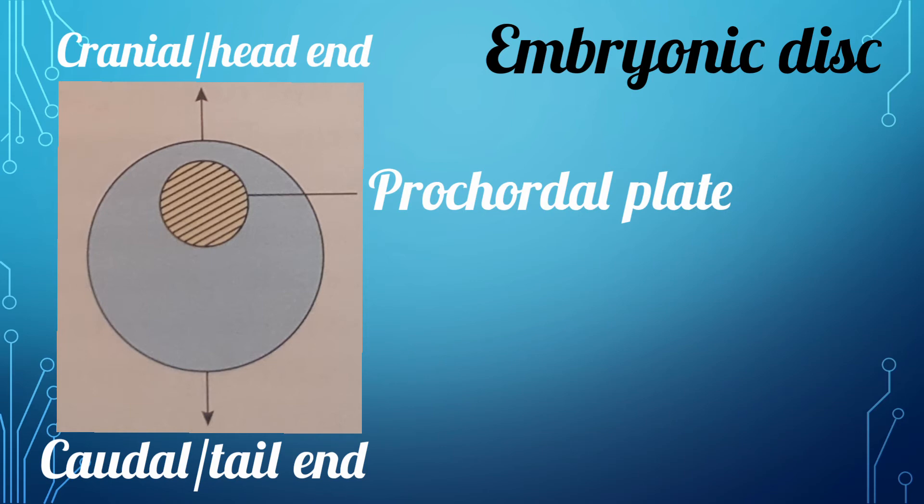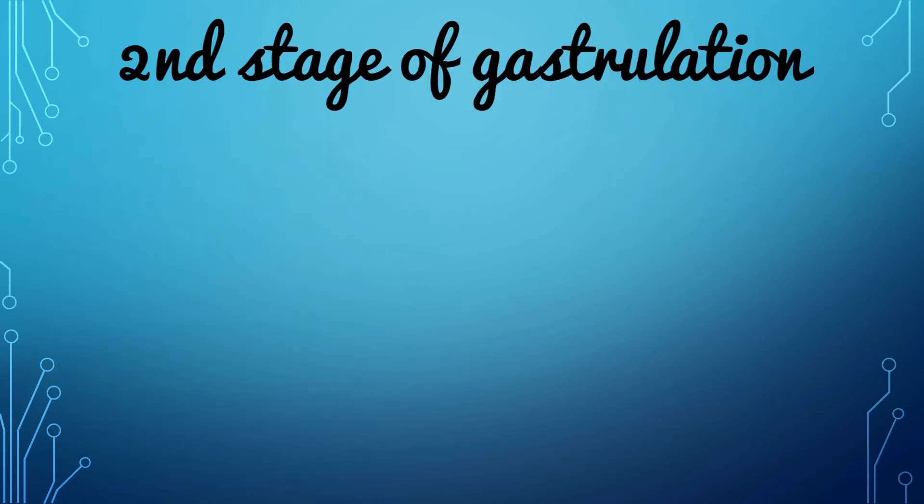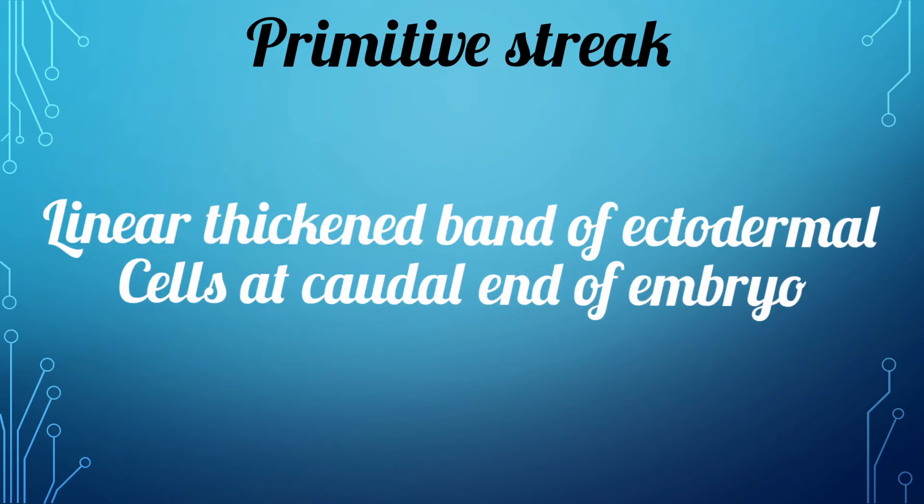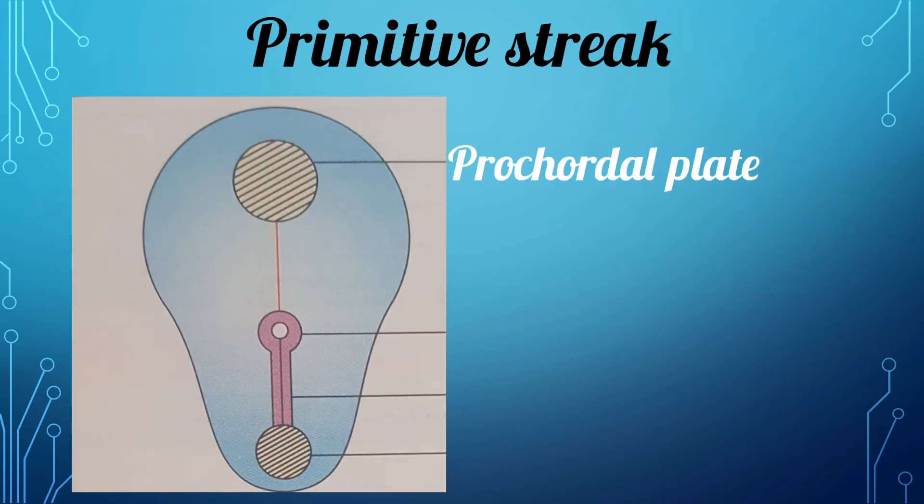Now the second stage of gastrulation, that is the primitive streak formation. The primitive streak is a linear band of ectodermal cells which appears in the midline of the caudal end of the embryonic disc. Since the primitive streak is a linear band of ectodermal cells, these cells of the primitive streak invaginate towards the endoderm forming a groove on its surface called the primitive groove.